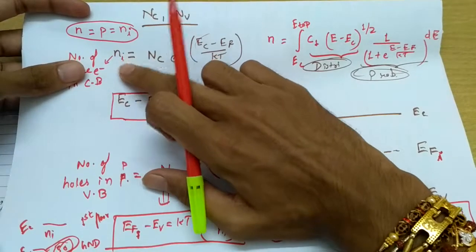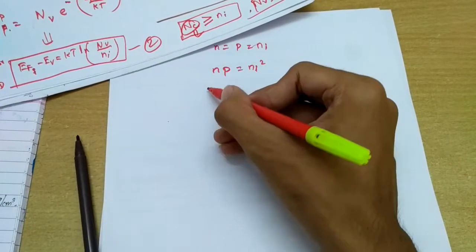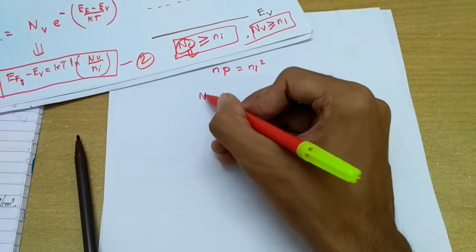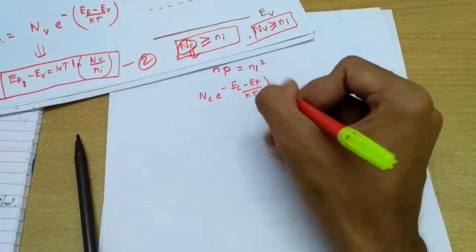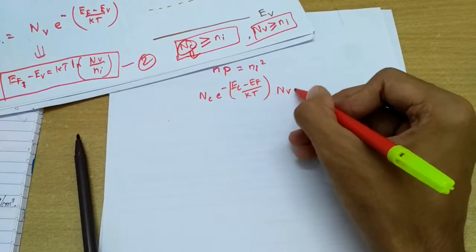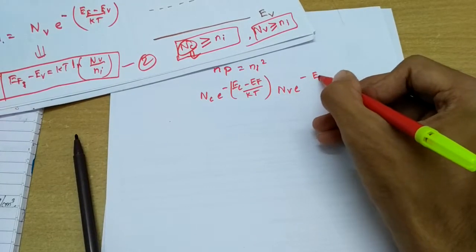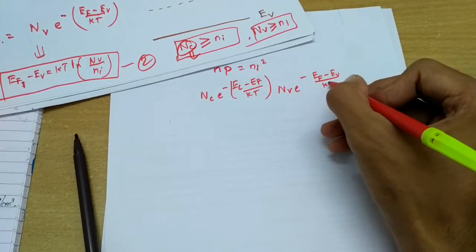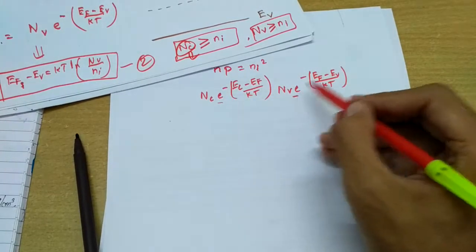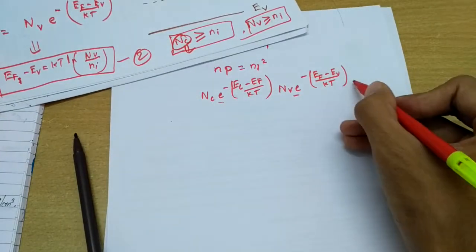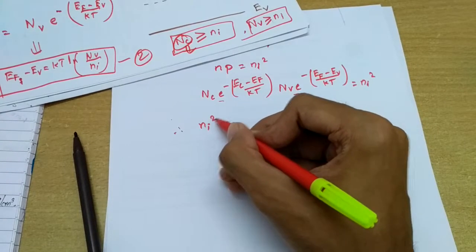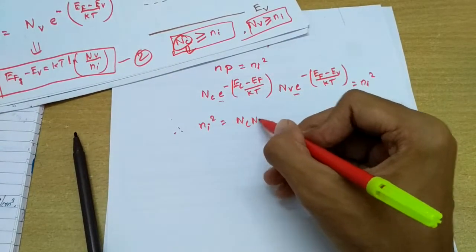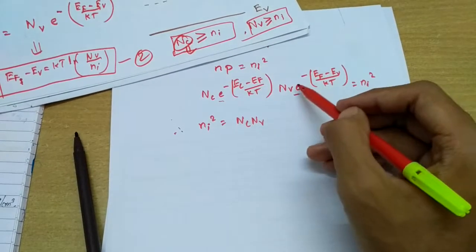Writing the value of n: it is nc·e^(-(Ec - Ef)/kT). Similarly, writing the value of p: it is nv·e^(-(Ef - Ev)/kT). Since the base is the same, the exponents add. We get ni² = nc·nv·e^(...), and you can see that Ef cancels out.